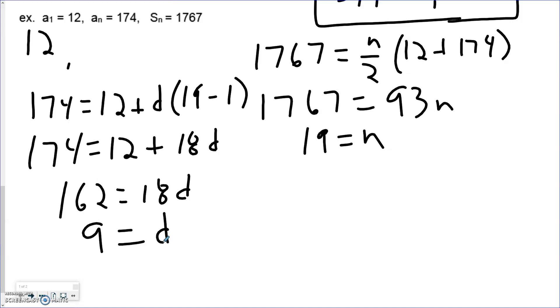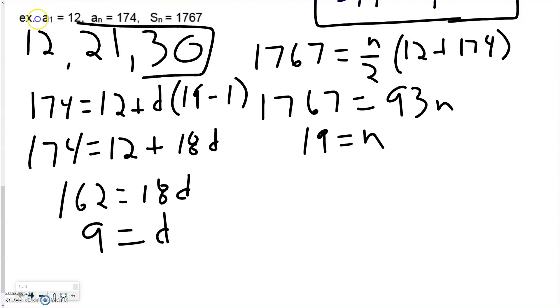This tells us the sequence is increasing by 9 every number. Going back to the beginning: the first number was 12, the next is 21, and the third is 30, giving us the first three terms of that sequence.